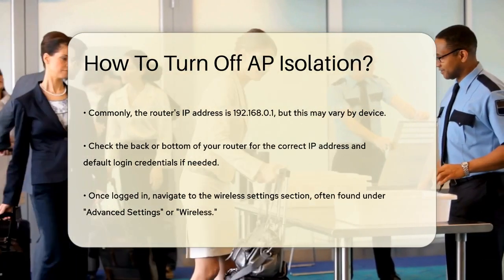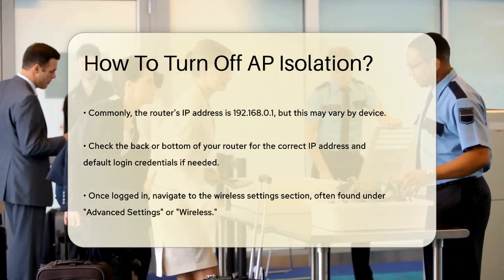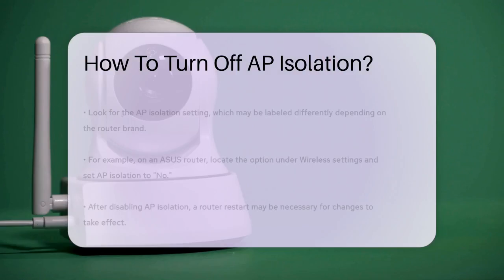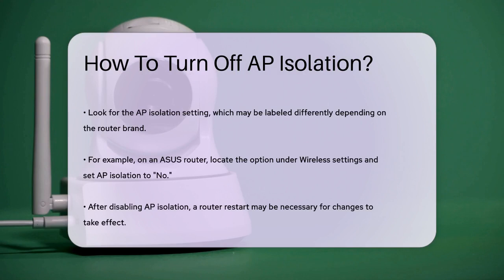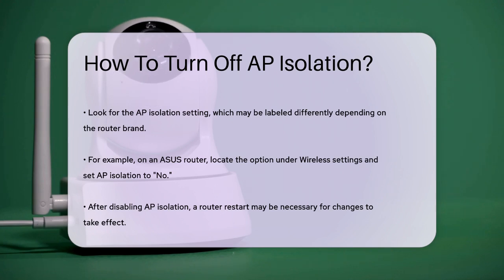Once you're logged in, navigate to the wireless settings section. This might be under an advanced settings or wireless tab. Here you'll find the AP isolation setting — it might be labeled as 'AP isolation' or something similar. For instance, on an ASUS router, you would go to wireless settings, then to the professional section, and there you'll find the option to set AP isolation to 'No'.